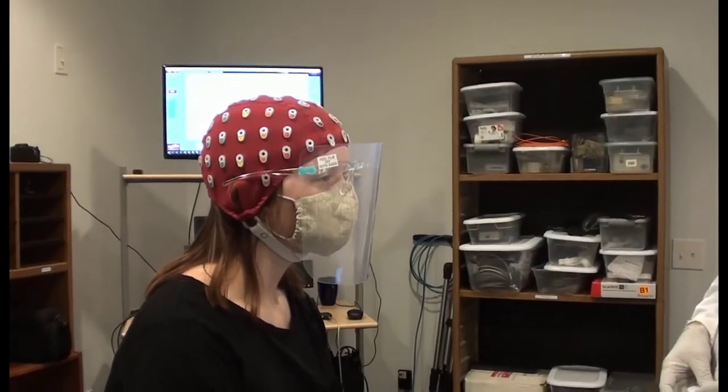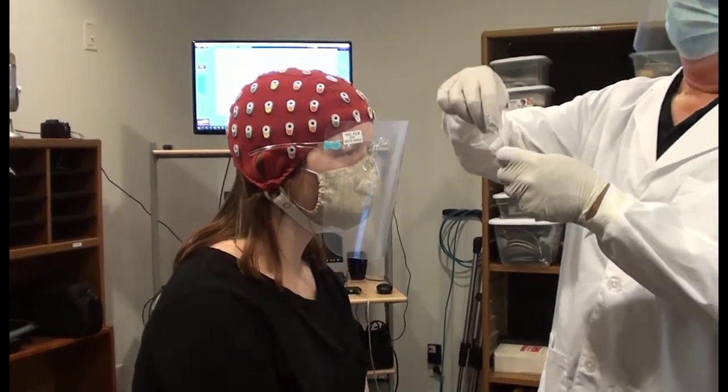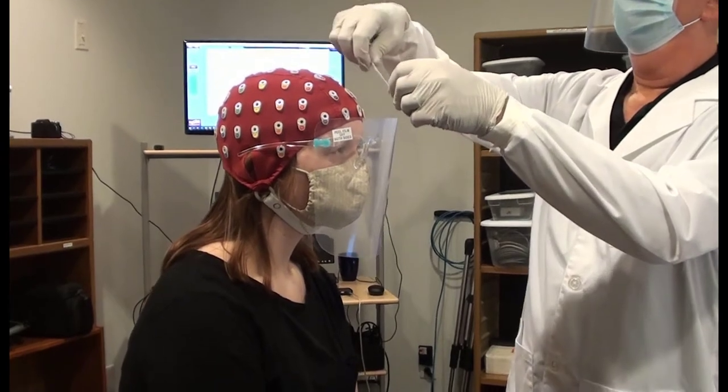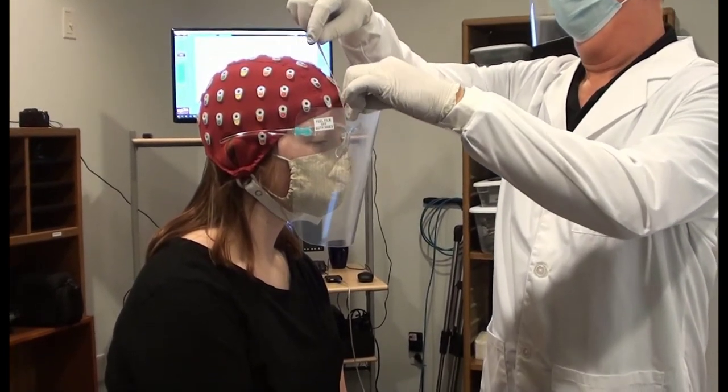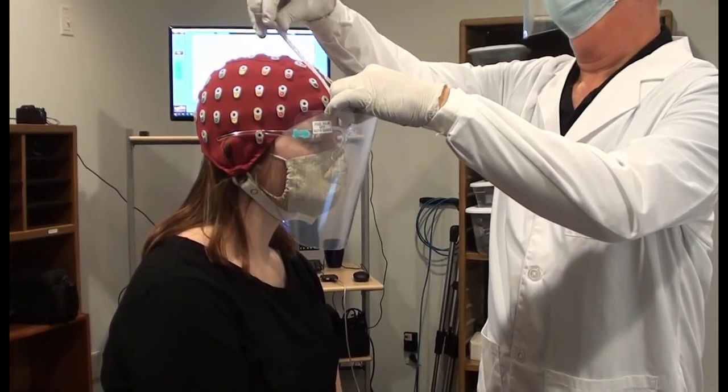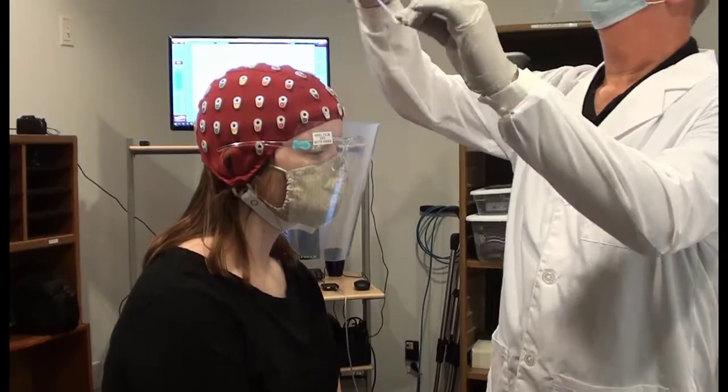Here's where that nasion to vertex value, half of the nasion to inion distance comes in handy. FYI, this is easier without the face shield. Measure the nasion to vertex distance and ensure that the electrode location, the small hole in the vertex or CZ holder, is at half the distance from nasion to inion.